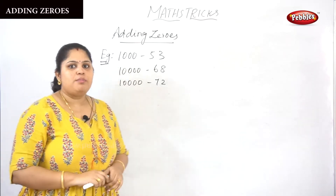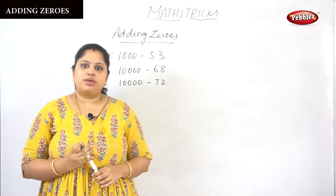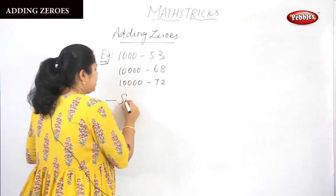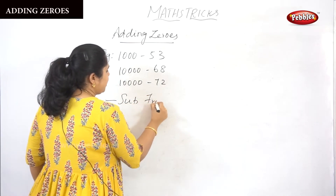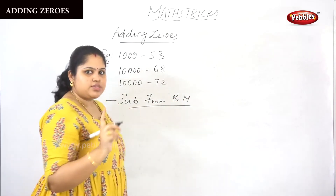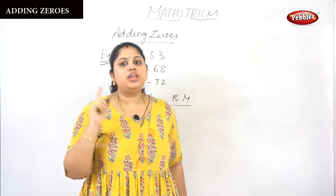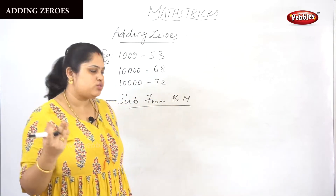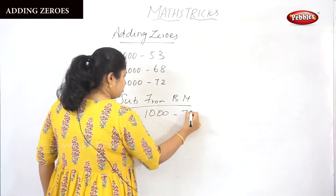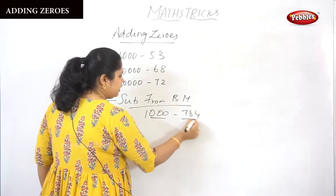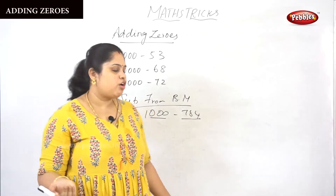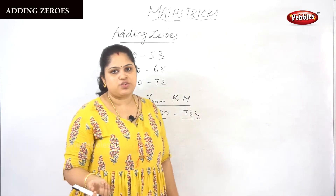When you are performing the subtraction from the base method, I have to teach you the subtraction from base method first. In this base method, the main thing to see is that the number of zeros should be equal to the number of digits. Here there are three zeros and three digits. If that condition is satisfied, then we can perform all from the nine and the last from the ten.